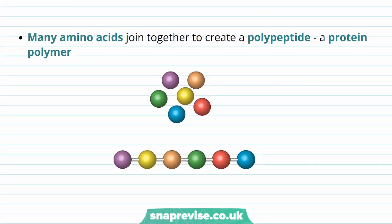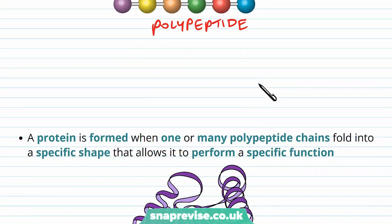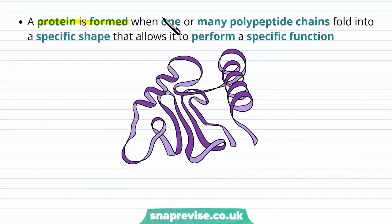If we join more than two — many amino acids joined together — they form a polypeptide, 'poly' meaning many, and this is a protein polymer. Sometimes the words protein and polypeptide are used interchangeably, but polypeptide is more specific: it's lots of amino acids joined into a long chain of more than two. Protein is a much more vague term.